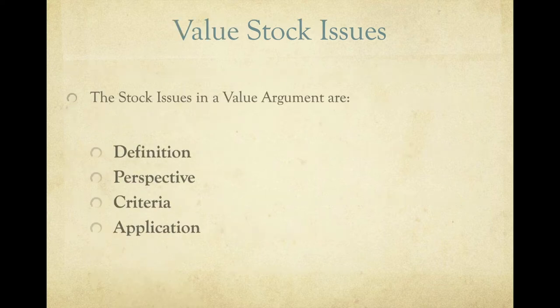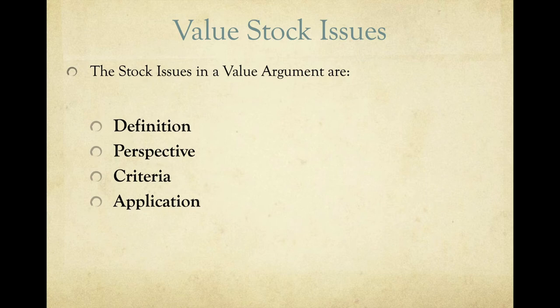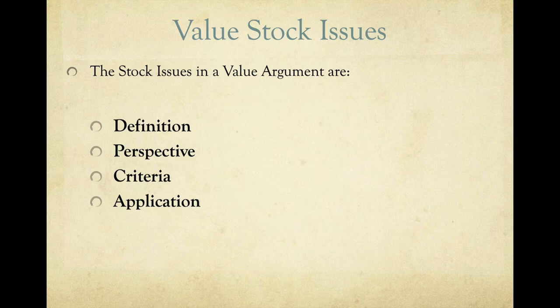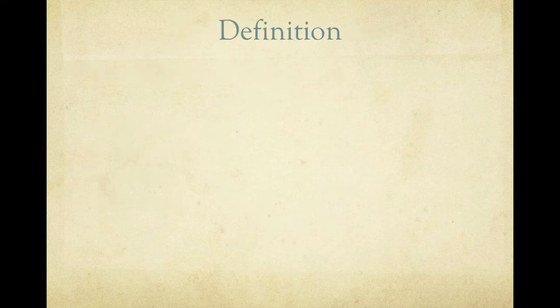The stock issues in a value argument are: first, definition; then perspective; then criteria; then application. These are described in detail in the written instructions, and I'm going to talk about each one individually here as well. Basically, this is the large-form outline for everybody's paper. Everybody will have a section dealing with definition, a section dealing with perspective, a section dealing with criteria, and a section dealing with application.